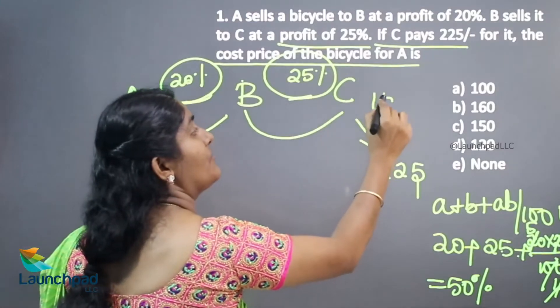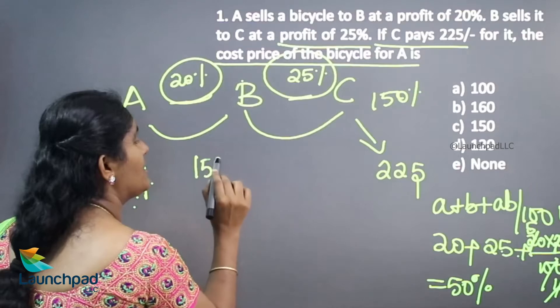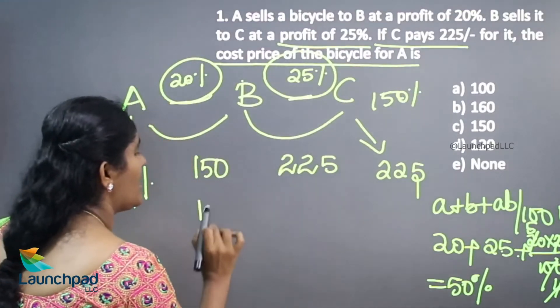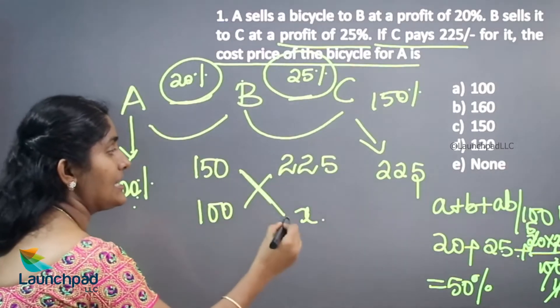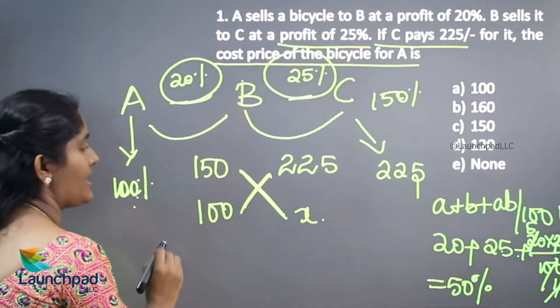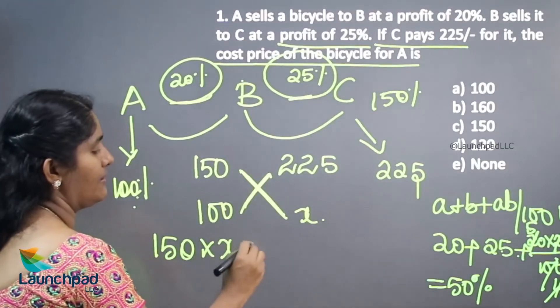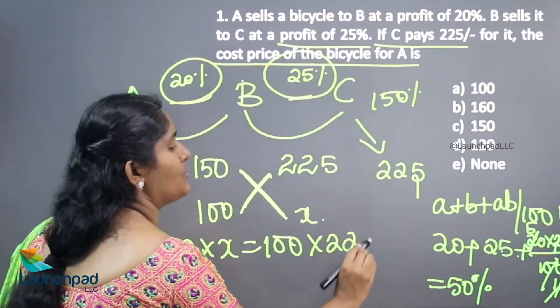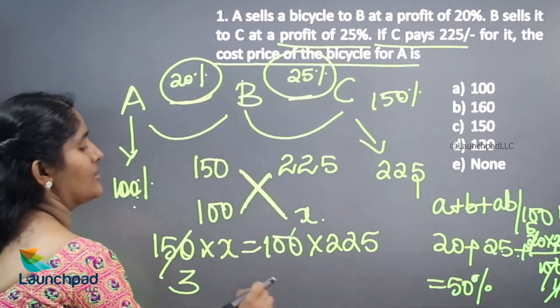Now 150% value is 225. What is your 100%? By cancelling, we are going to get the cost price of A's. That is 100% is what? 150 into X is equal to 100 into 225. This is 3 times and this is 2 times.